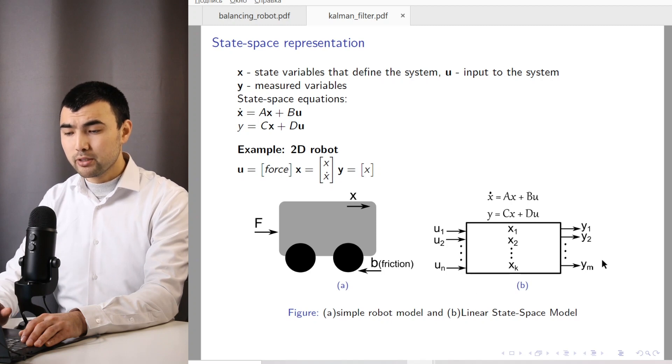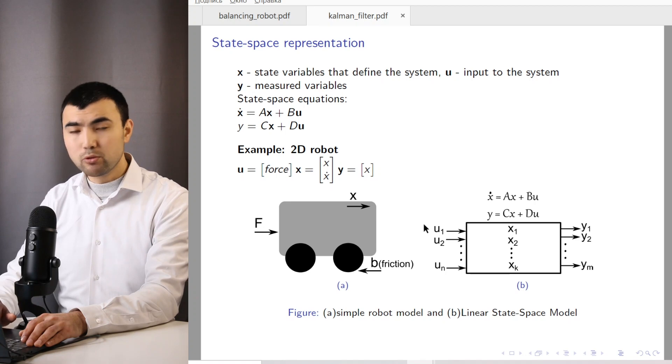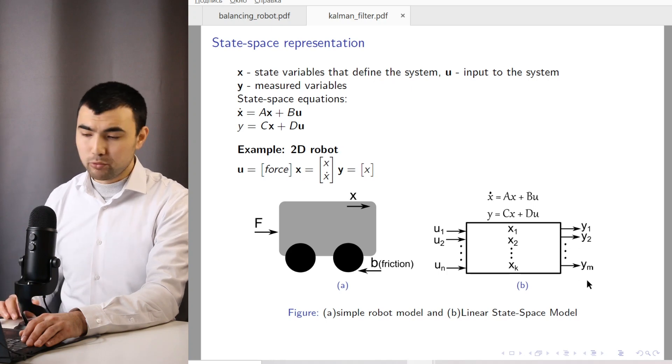So we have this box illustrating our system, and we have inputs, and we use U letter to denote them. And we have measured variables, and we use Y letter to denote them.